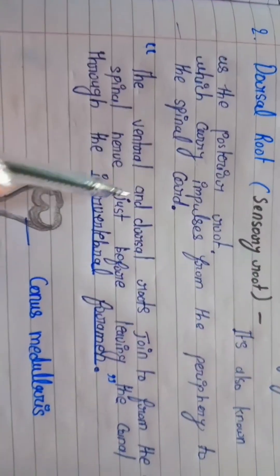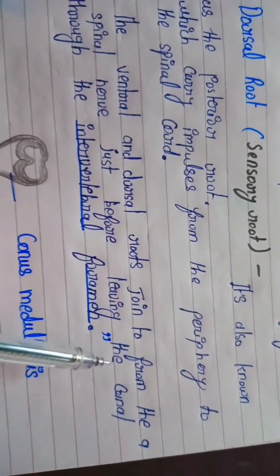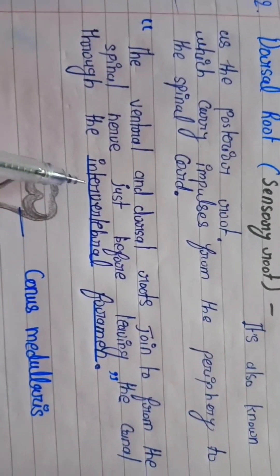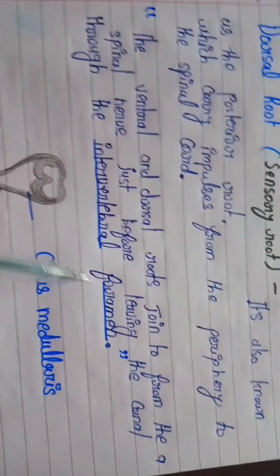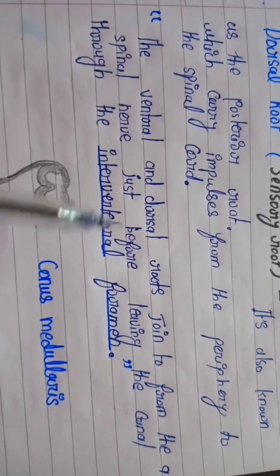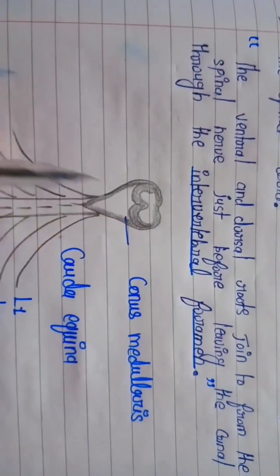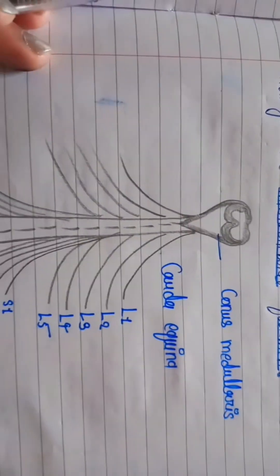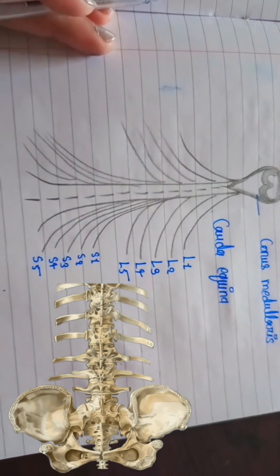The ventral and dorsal roots join to form a spinal nerve just before leaving the canal at the intervertebral foramen, where both the ventral and dorsal roots are present. You can see this in the diagram of the spinal nerve.